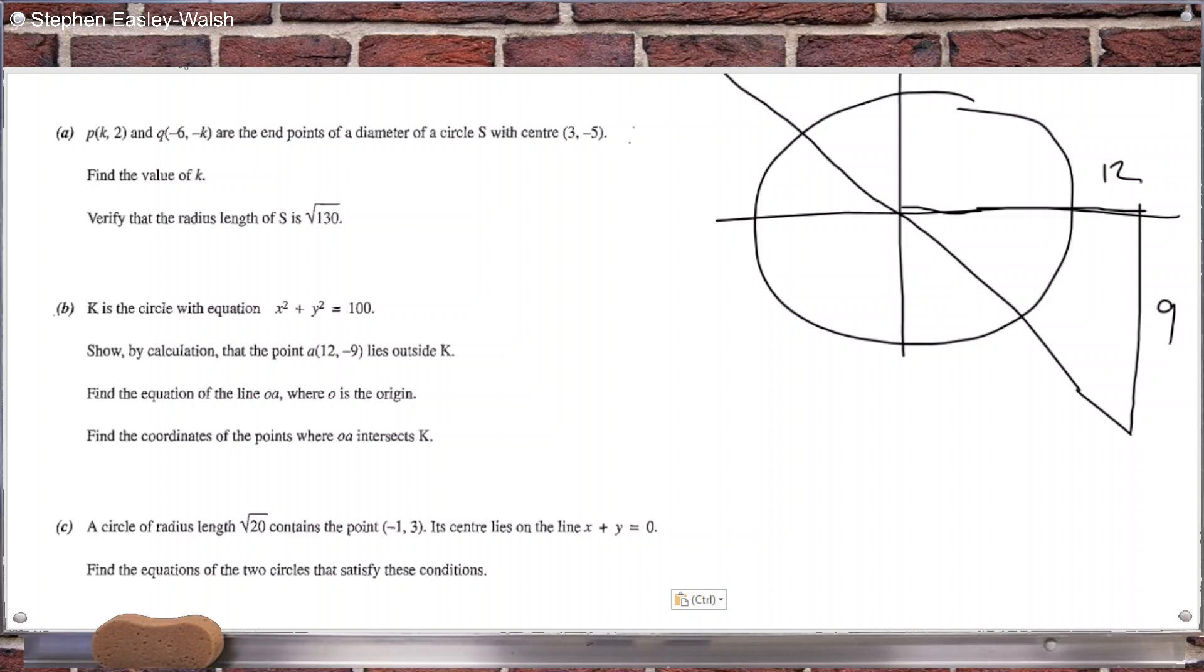Now, that has a hypotenuse of 15. But this, if this is 10, then therefore that length there would be 5. So all you would have to do is come out two thirds. So that would be 8 and that would be 6. And it's going to be, I think, symmetric, isn't it? On the other side.